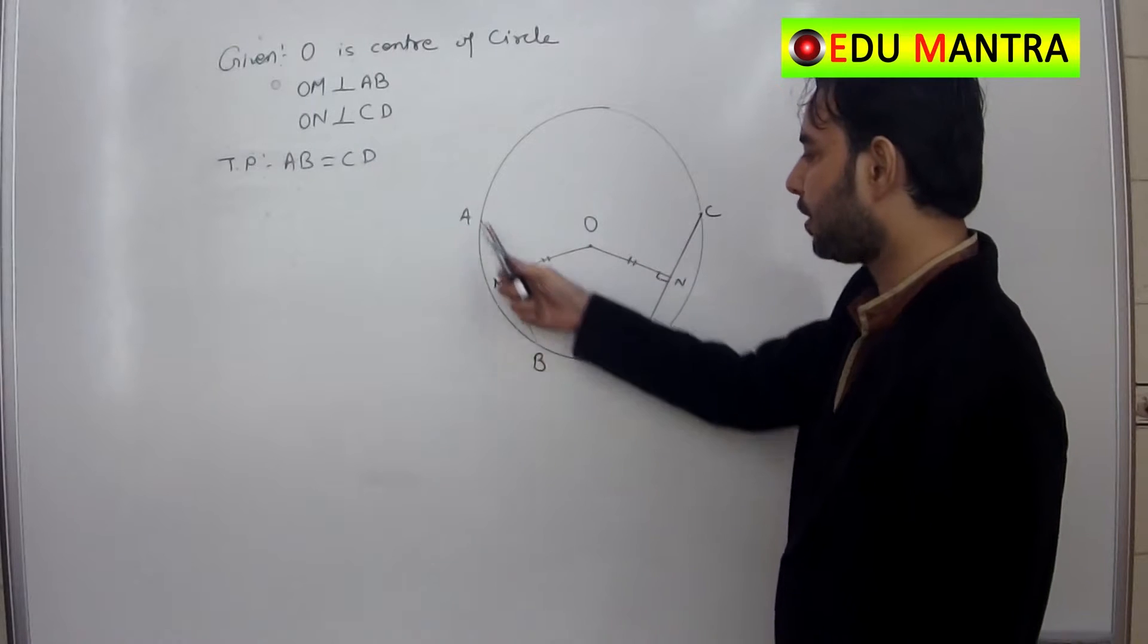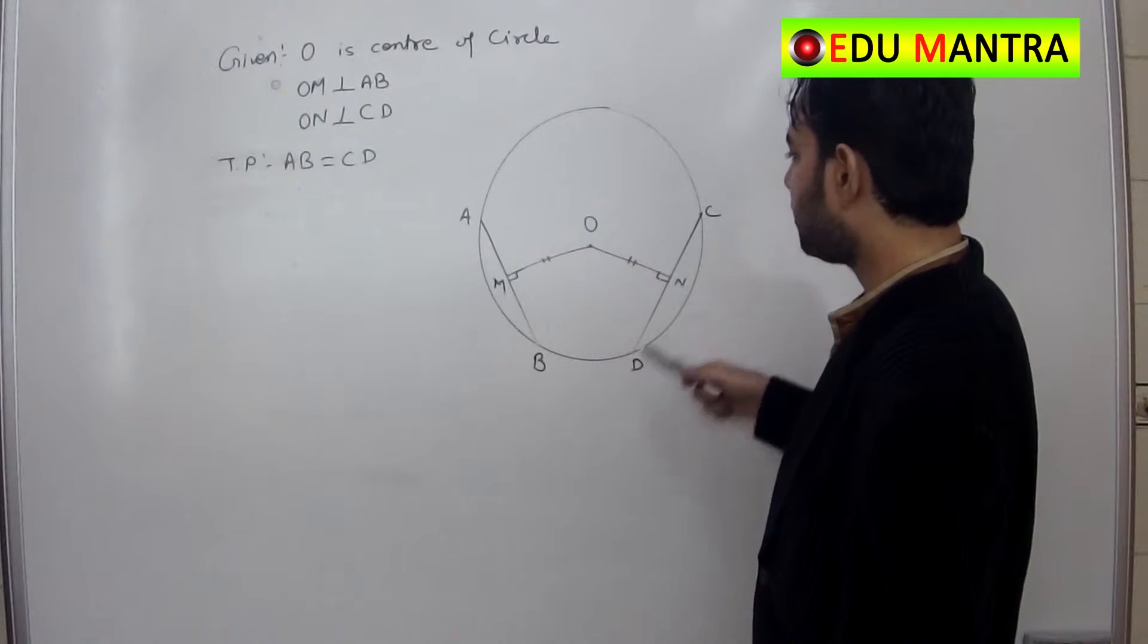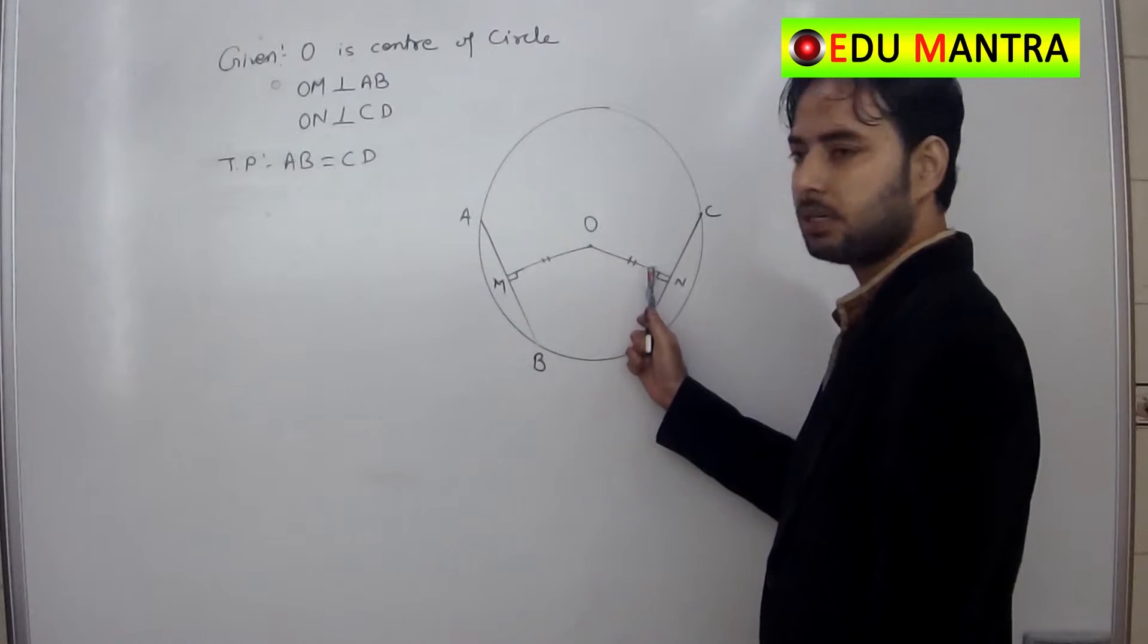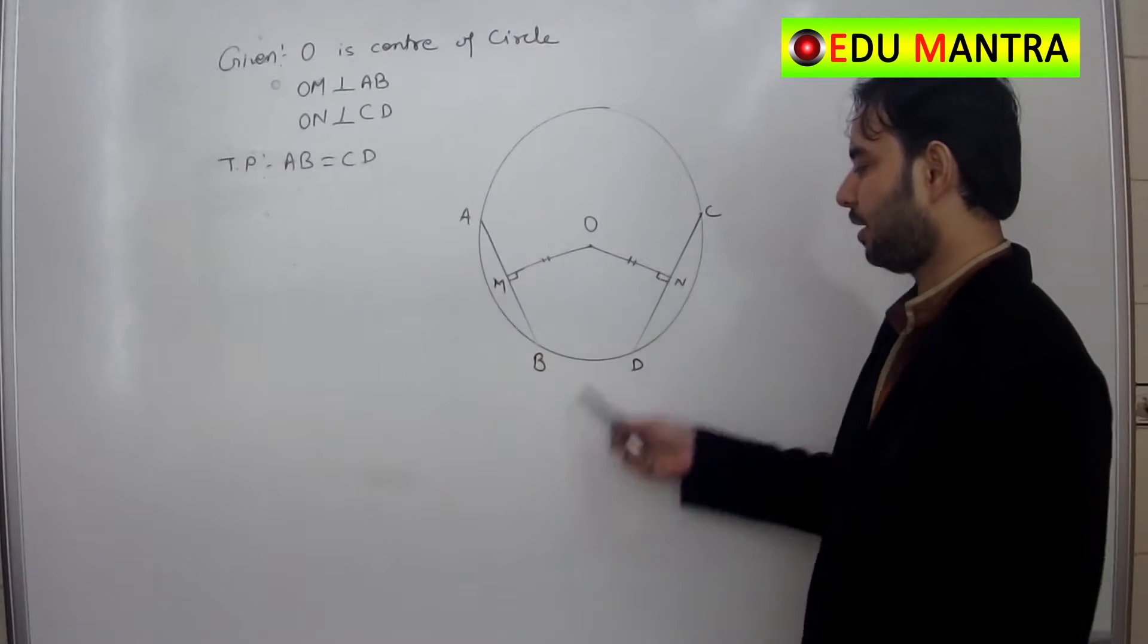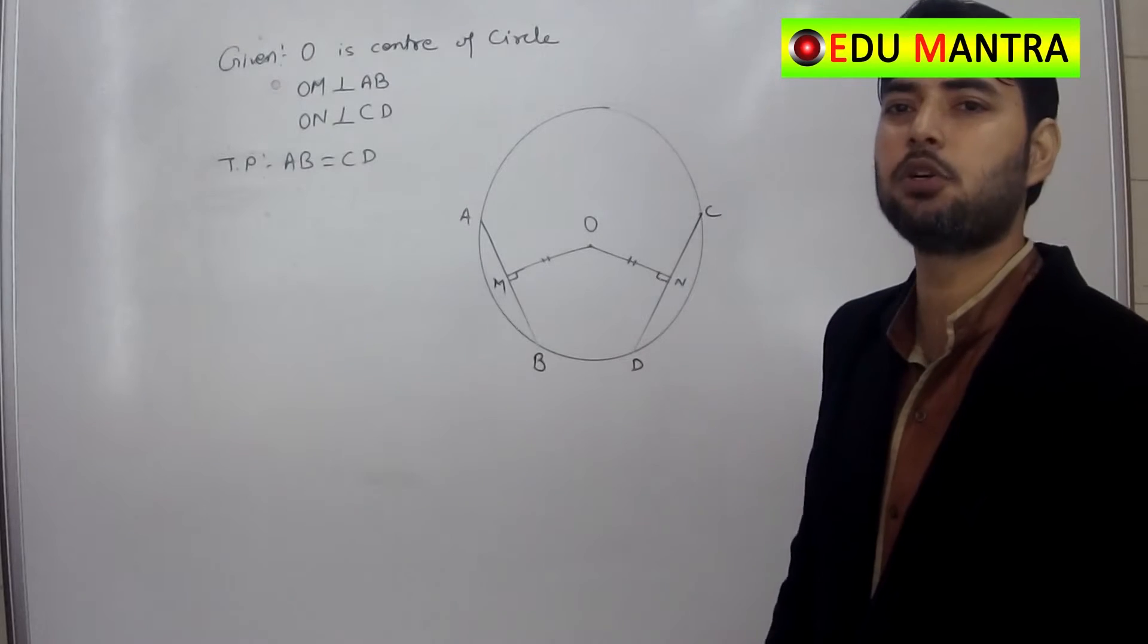It means what? If OM is perpendicular to AB, ON is perpendicular to CD, then OM is equal to ON. It means chords which are equidistant from the center will be equal. It means AB is equal to CD. You have to prove.